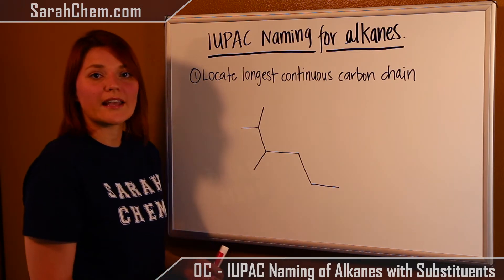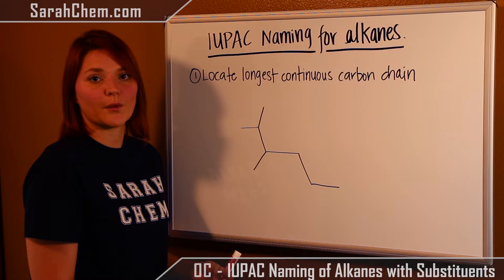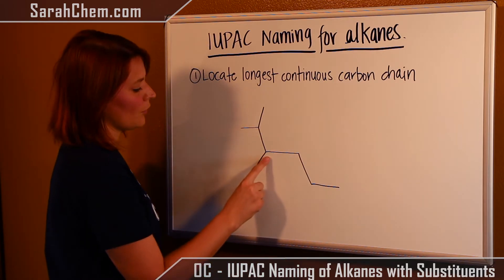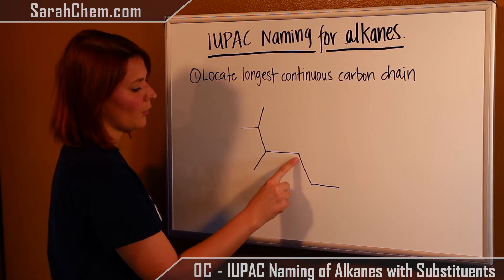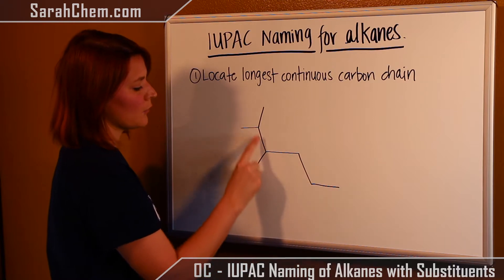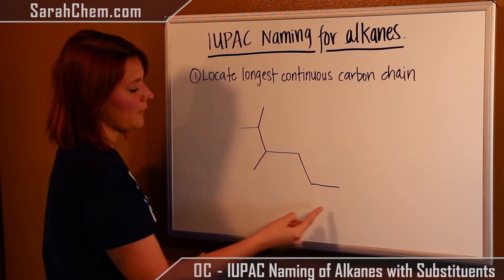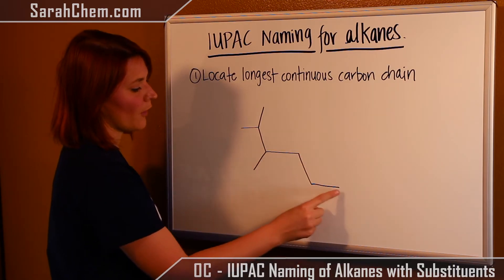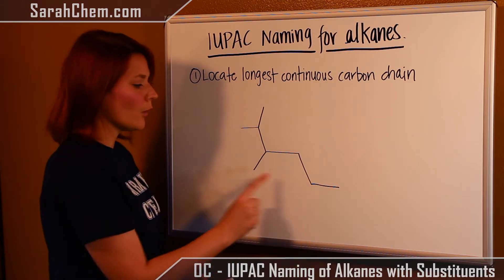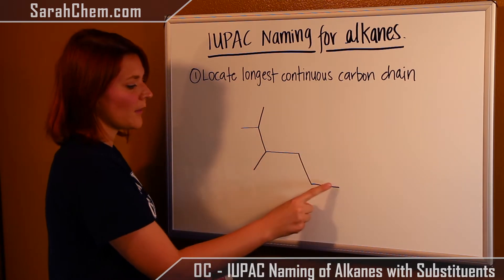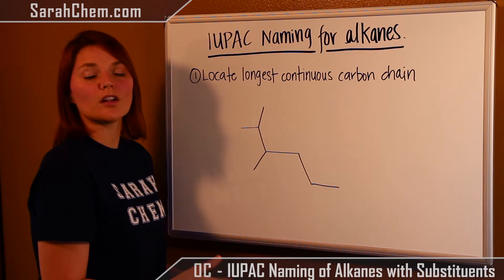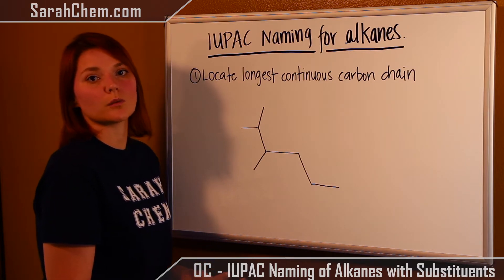We're going to move around and count the carbons. Going one direction we count 1, 2, 3, 4, 5, 6. Going another direction we only get 1, 2, 3, 4, 5. So already we know that direction cannot be the parent chain because it only has 5 carbons and we've already found one with 6.